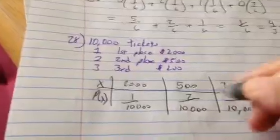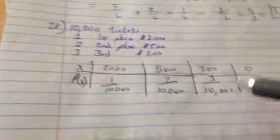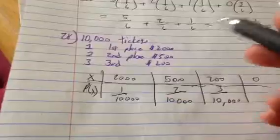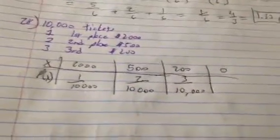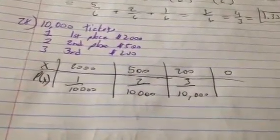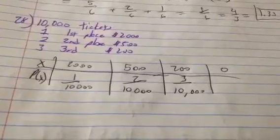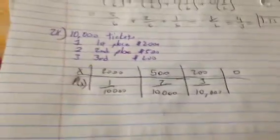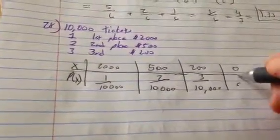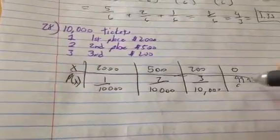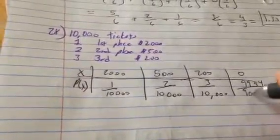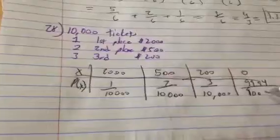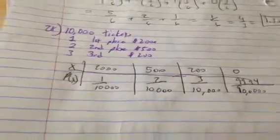Now most likely we won't win anything, and there are only 3, 4, 5, 6 winning tickets, so that means the rest of them are losing tickets. So there's 9,994 losing tickets, so there's a 9,994 out of 10,000 chance that you'll lose.